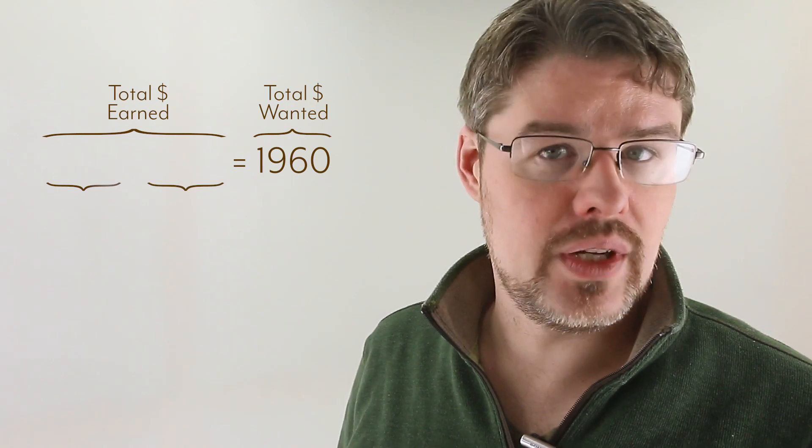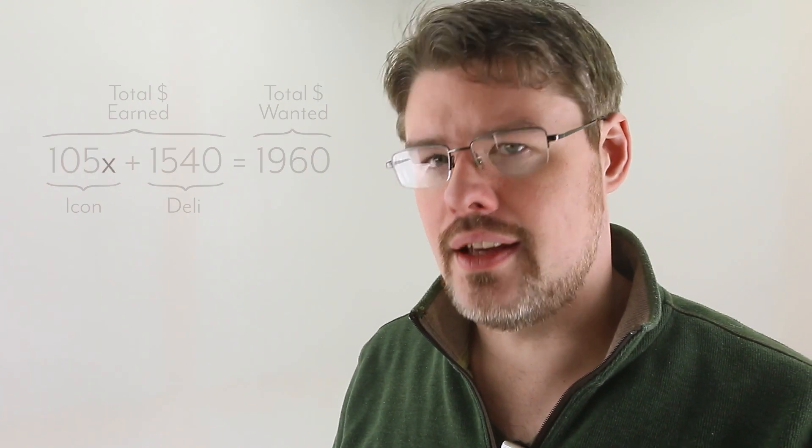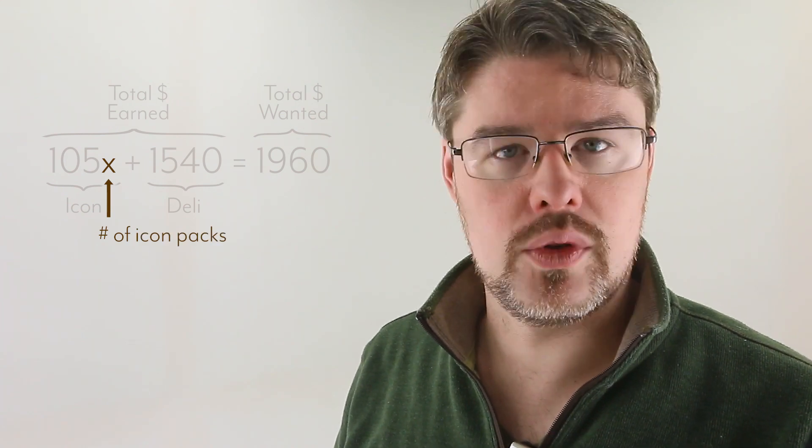So on the left side, we have two things to add. The amount of money from my deli job, $1,540, and the amount of money made from making icon packs. Here, $105 is the amount earned per icon pack, and X is the number of packs I made that month, which is what we're looking for.